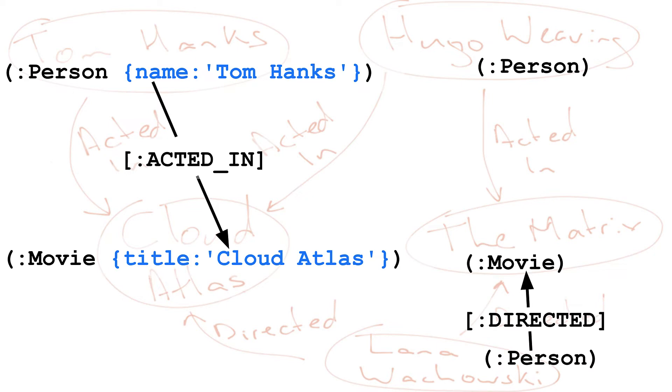Properties are specified with braces and a set of property key value pairs. In this example, one person node has a name property of Tom Hanks and one movie node has a title property of Cloud Atlas.